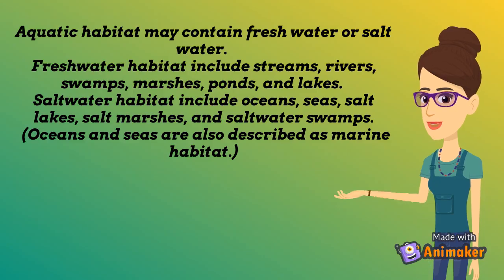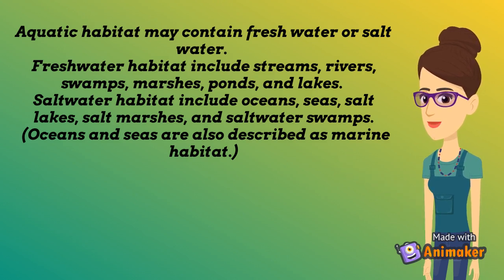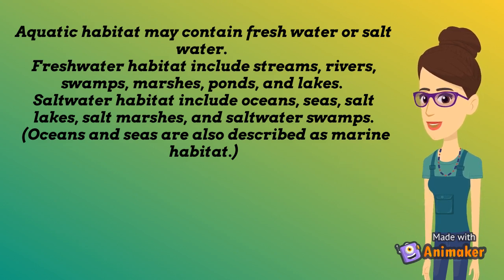Aquatic habitat may contain freshwater or saltwater. Freshwater habitat includes streams, rivers, swamps, marshes, ponds, and lakes. Saltwater habitat includes oceans, seas, salt lakes, salt marshes, and saltwater swamps.